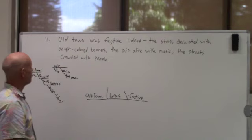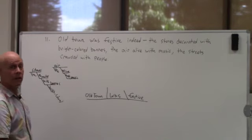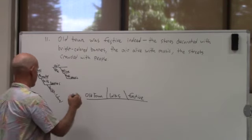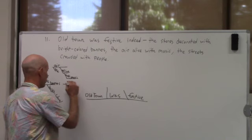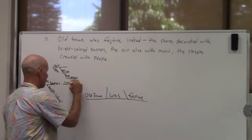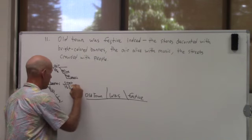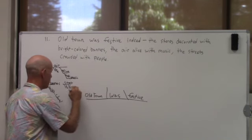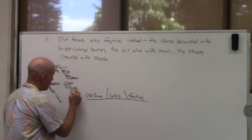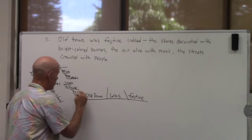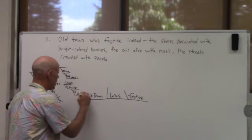Okay. And do we have another one? Okay. Crowded—that's your passive participle—with people. Now where do your dots go? No dots.